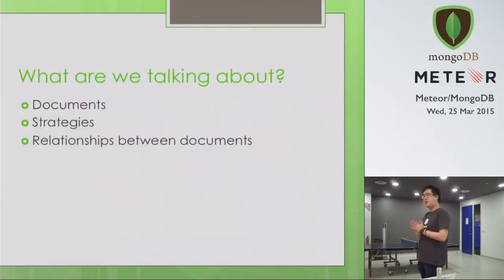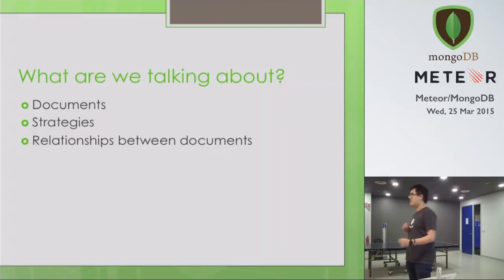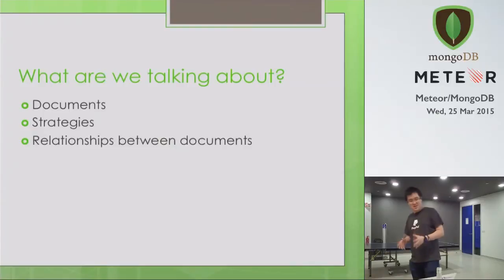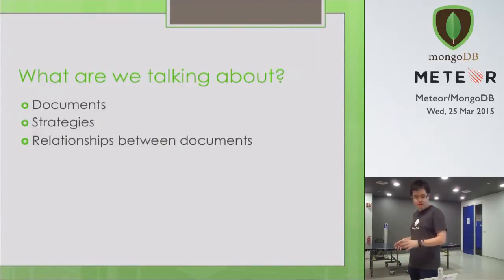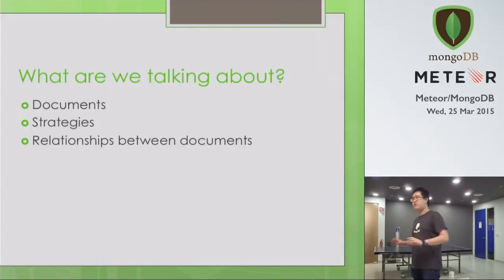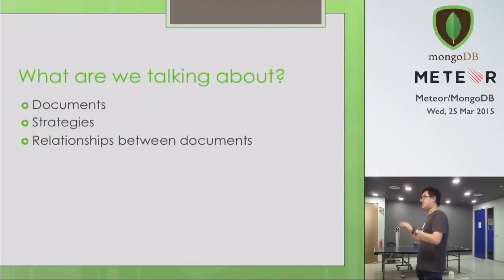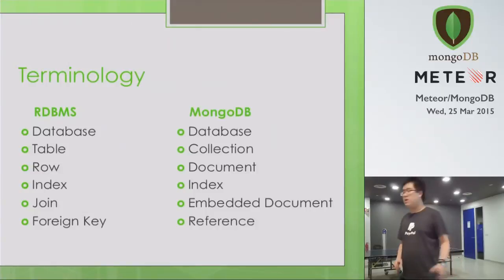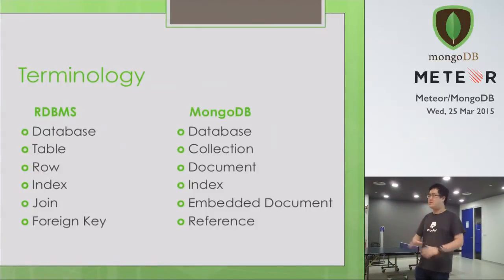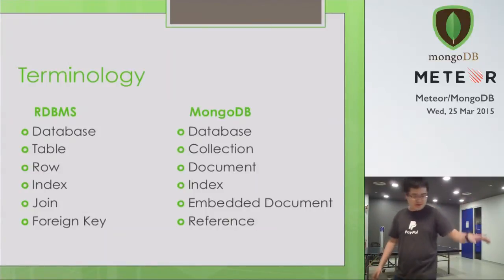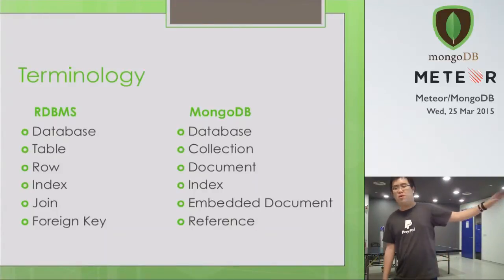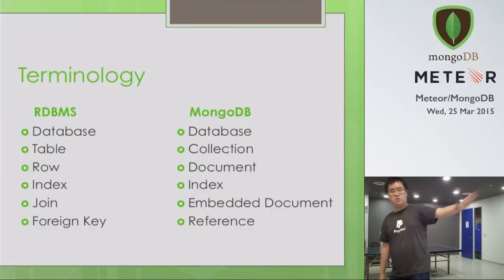Quick show of hands — how many of you have used MongoDB before? Okay, so I don't have to talk anymore, I guess. When we talk about documents and strategies, how you create the schema for each document and how you define relationships between different documents — because as much as you hate joins, you will have to have documents that are related to each other. Terminology first: since most of you have used Mongo, I don't need to go through this. This is basically a one-to-one mapping between the normal RDBMS terms and the MongoDB terms.